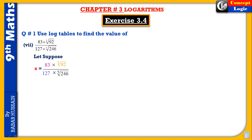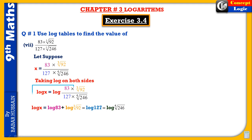We will take log on both sides of the given equation and apply it to our question. First, we will apply to the numerator: log 83 plus log 92 (index 3). The denominator values are negative: minus log 127 minus log 246 (index 5).